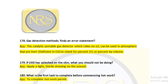Question number 178: Gas detection methods — find the error statement. The catalytic portable gas detector, which relies on oxygen, can be used in an oxygen-deficient inert atmosphere to check the presence of LFL using an explosive meter. This is the error: a catalytic combustion detector works by burning the gas in the presence of air; if there is no air, combustion will not take place. Therefore, you cannot use it in an inert condition since inert gas prevents combustion. This is the incorrect statement.